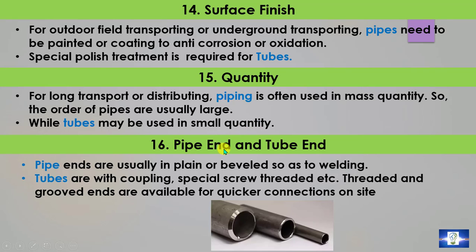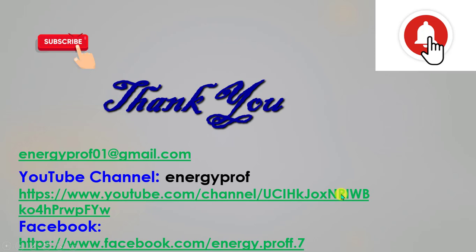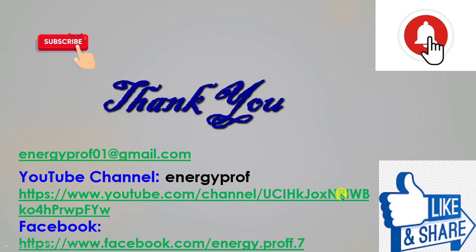Point 16: Pipe end and tube end. Pipe ends are usually plain or beveled for welding. Tubes have coupling, special screw-threaded ends, etc., with threaded and grooved ends available for quicker connection on site. I hope you understand well. If you have any questions, please comment. If you like my channel, please subscribe and press the bell icon to get updated videos. Please like and share. Thank you.